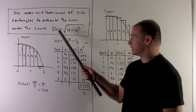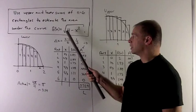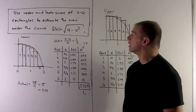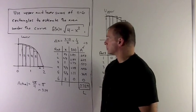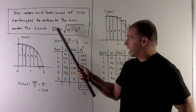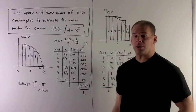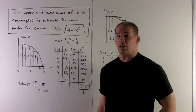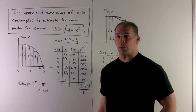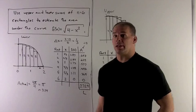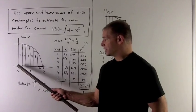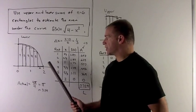So my function is f of x equal to square root of 4 minus x squared. Note, if I let f of x be equal to y, we square both sides, move the x squared to the other side. We have x squared plus y squared equals 4. So this is the circle centered at the origin of radius 2.